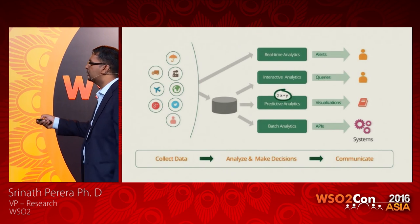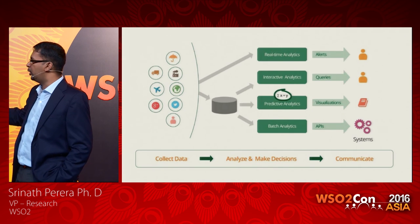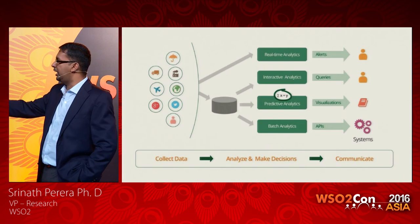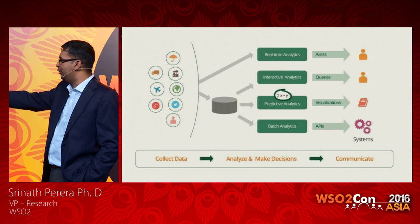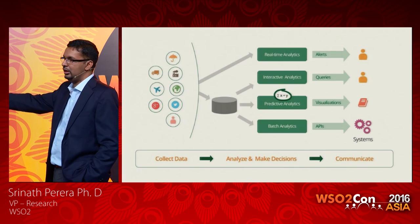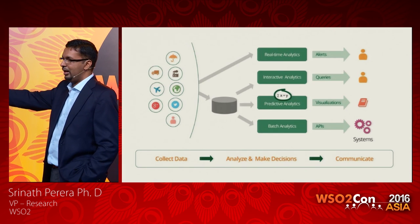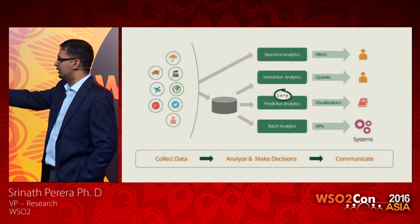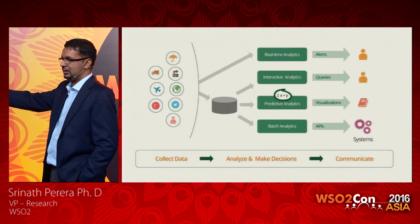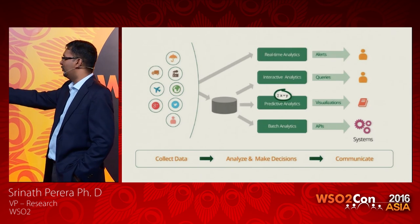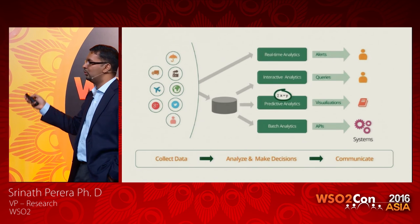This picture shows the WSO2 Analytics Platform, which brings together all these different technologies. The way to read this picture is: there are three stages — you collect data, you analyze and make decisions, and you communicate that to the end user. When you come to analysis, you have four choices, and when you come to communicate, you also have four choices. Any combination works.